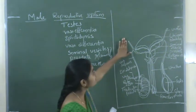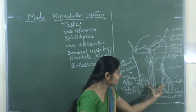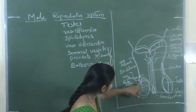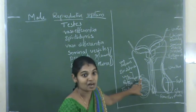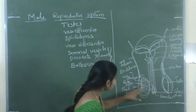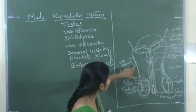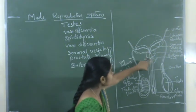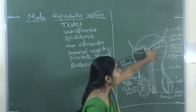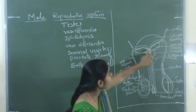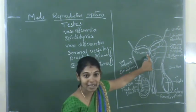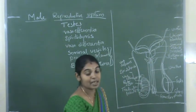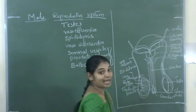In this diagram you can see the pair of testes — oval-shaped structures. The testis leads into the vas deferens, which is the first duct of the male reproductive system. Then the vas deferens leads into the epididymis, and the epididymis leads into the vas deferens. The associated glands include a pair of seminal vesicles and a single prostate gland below that.